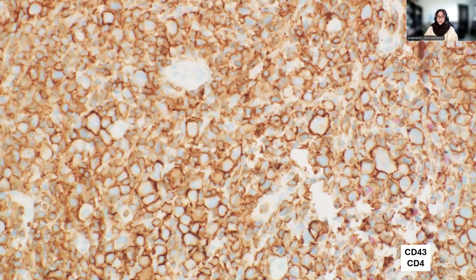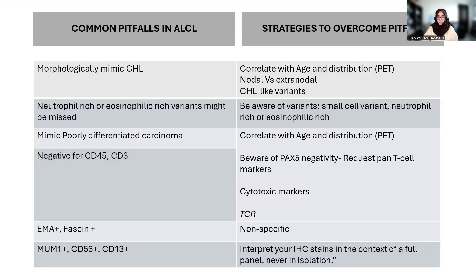The ALK was negative here. But the patient also presented with PV bleeding and had endometrial masses positive for the same lesion. When we have extranodal involvement — especially the uterus — you really want to consider a T-cell lymphoma with this morphology. The horseshoe-shaped nuclei and diffuse CD30 positivity led us to conclude this is most consistent with ALK-negative anaplastic large cell lymphoma.